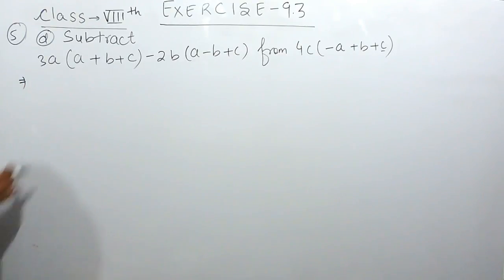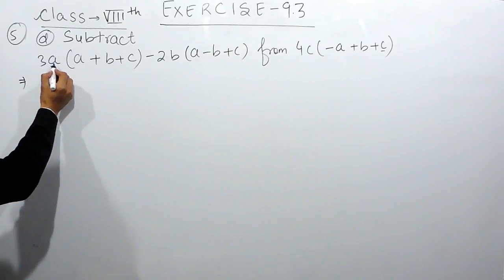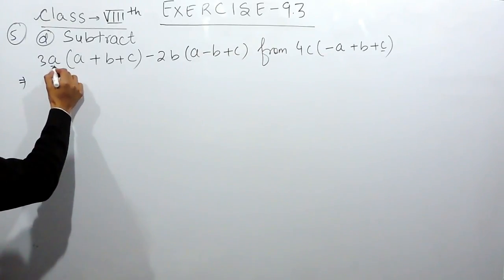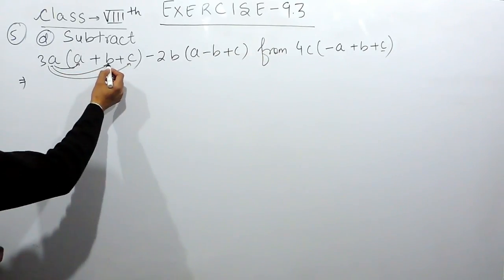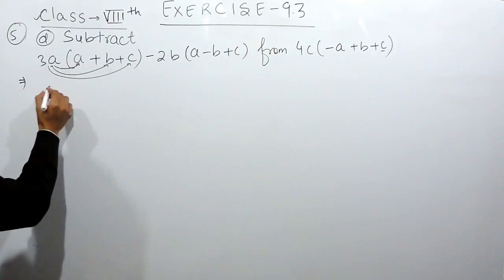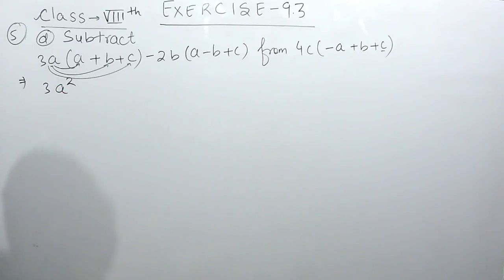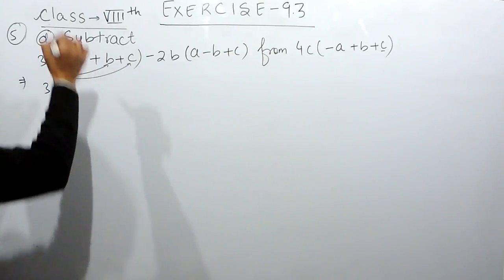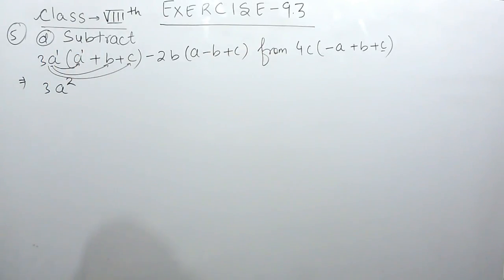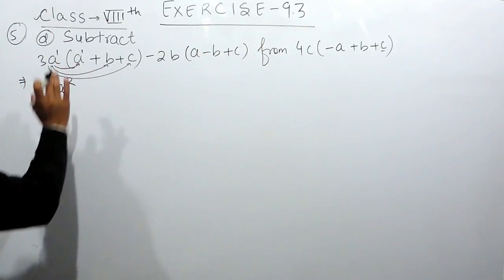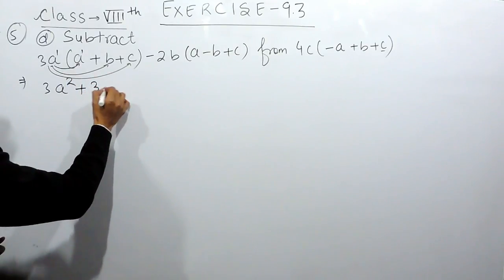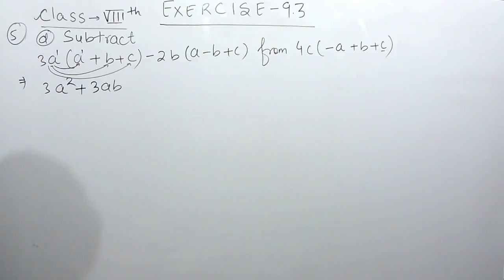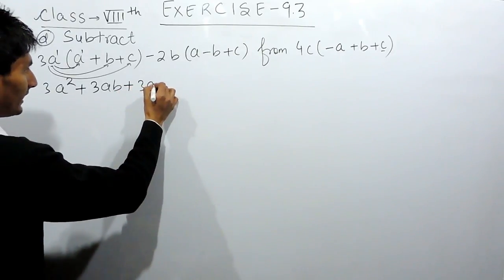Now let's solve this. To open this bracket, you have to multiply 3a with all the terms — with a, as well as b, as well as with c. So 3a multiplied by a will give 3a square, because when the base is same, the power is added. And if there is no mention of power, we consider it as 1. Similarly, 3a multiplied by b will give 3ab, and at the last, 3ac.